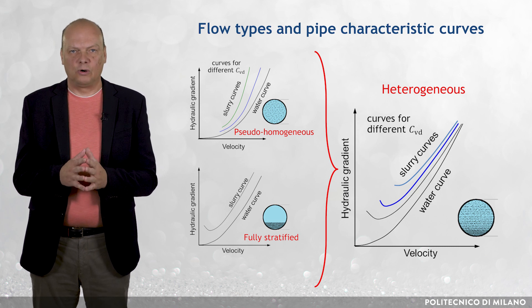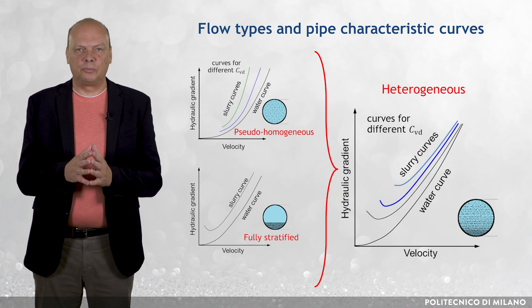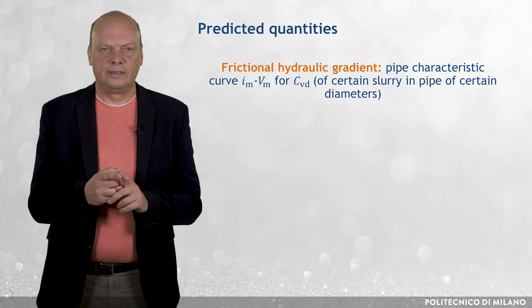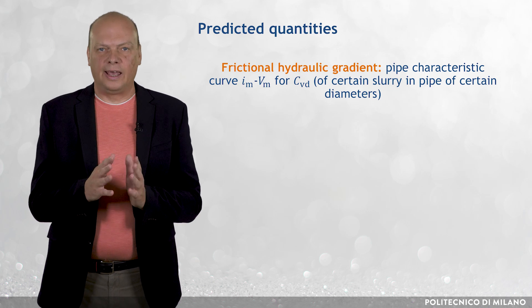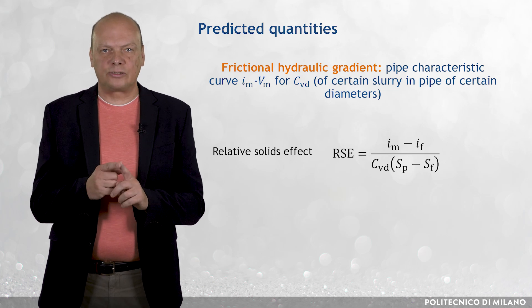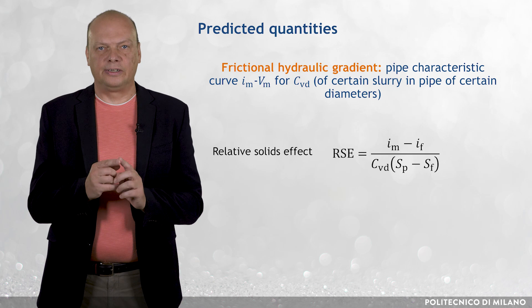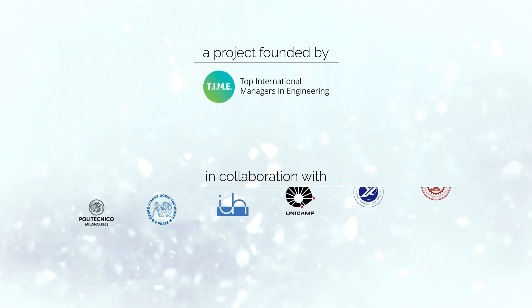A special case is the flow of broadly graded solids in a Newtonian carrier, in which grains supported by different mechanisms interact with each other. In evaluating the frictional hydraulic gradient, settling slurry models typically use some dimensionless group, such as the relative solids effect RSE. It represents the extra friction loss caused by the conveyed solids and is related to other dimensionless groups, which differ for different types of settling slurries.